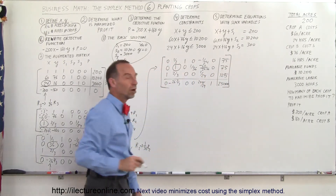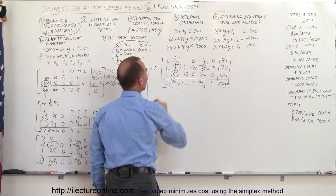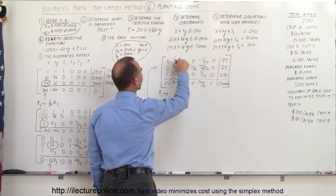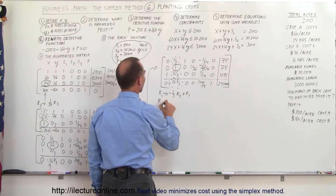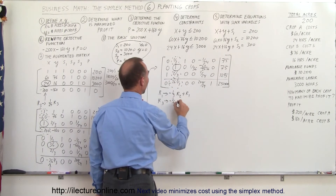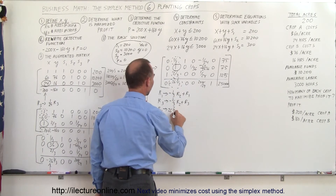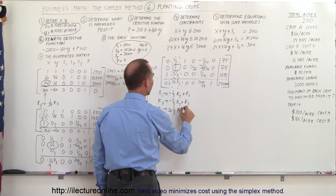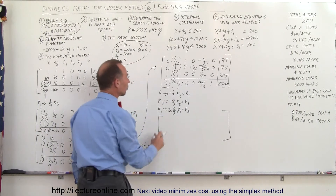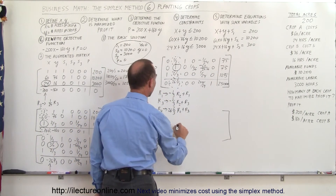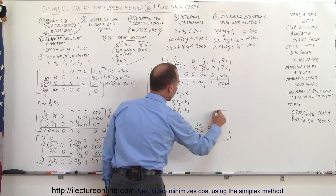We use that pivot to eliminate the y-column entries: row 1 is replaced by (−1/3) times R2 added to R1; row 3 is replaced by (−2/3) times R2 added to R3; and row 4 is replaced by (+26 and 2/3) times R2 added to R4. The second row with the 1 in it doesn't change: 0, 1, 0, 1/36, −60/(24×36), 0, and 75.